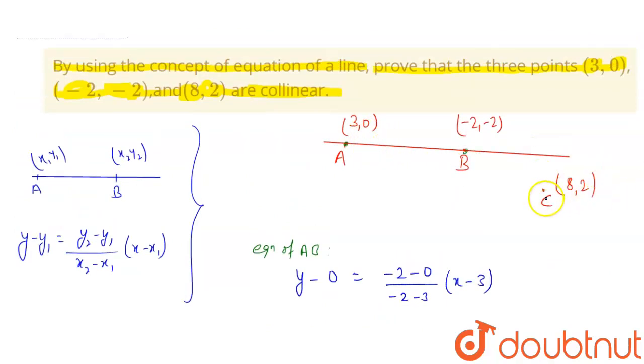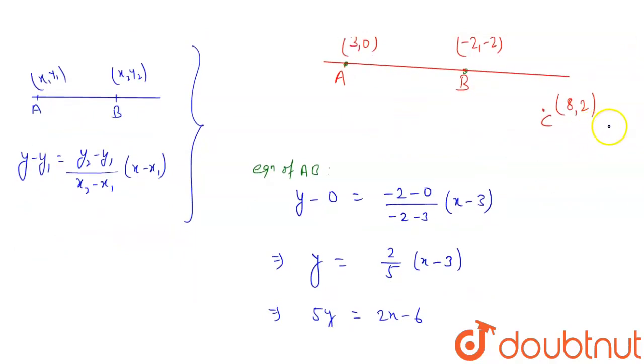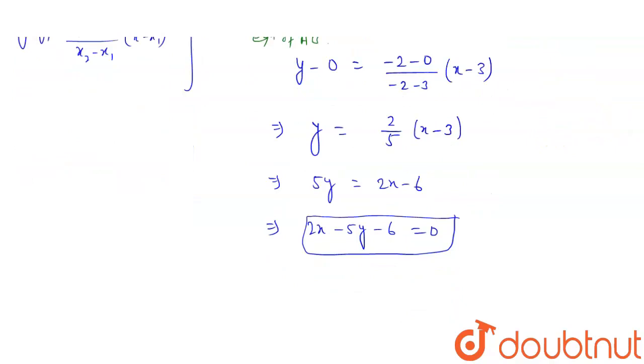Now, if this point will satisfy this equation, then you can say this point will be on this line, otherwise not. So let's try to satisfy (8,2) on this equation. Put (8,2) in this equation.